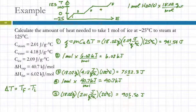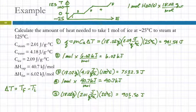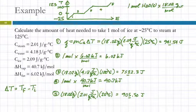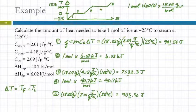A mistake students frequently make is using the entire temperature change — 125 and minus 25 — getting 150 degrees and applying that to all segments. Remember, you're calculating the energy for each line segment, not the whole thing at once. You have to do individual pieces. It's also important to include units, because some calculations give kilojoules and others give joules — you can't add joules to kilojoules. Since we'll end up with a large number, let's convert everything to kilojoules before adding.